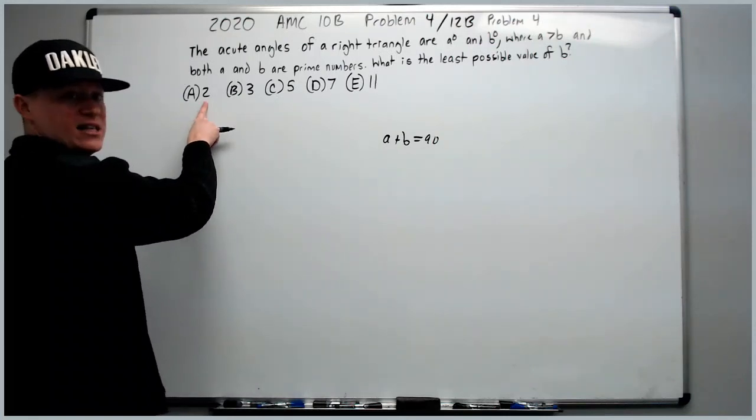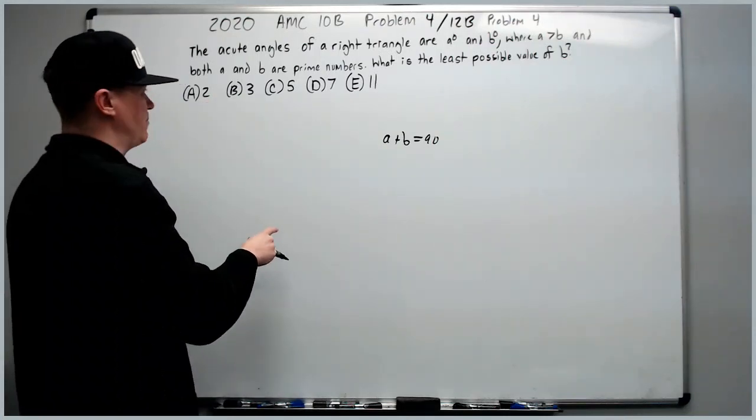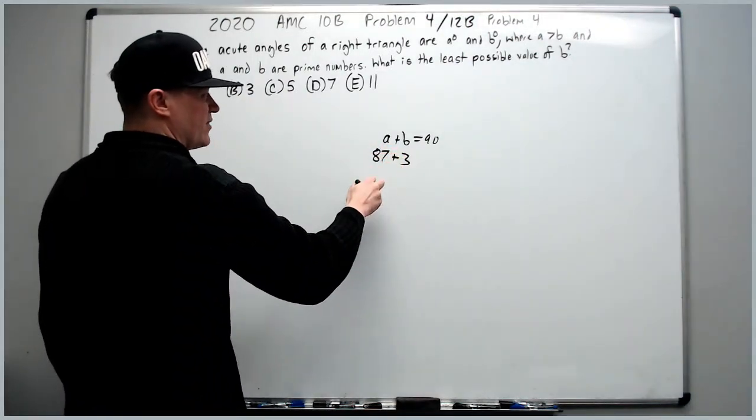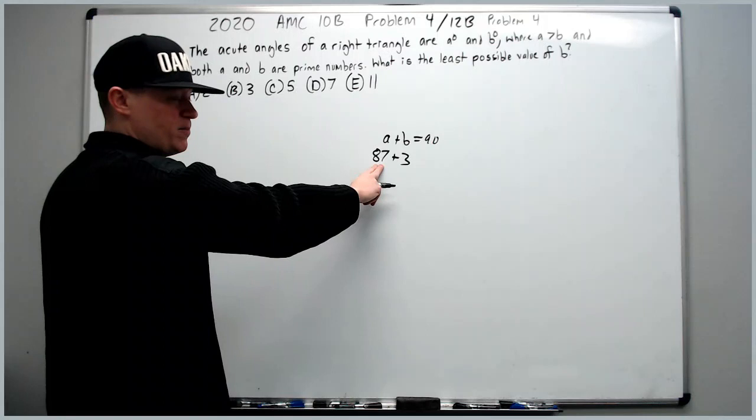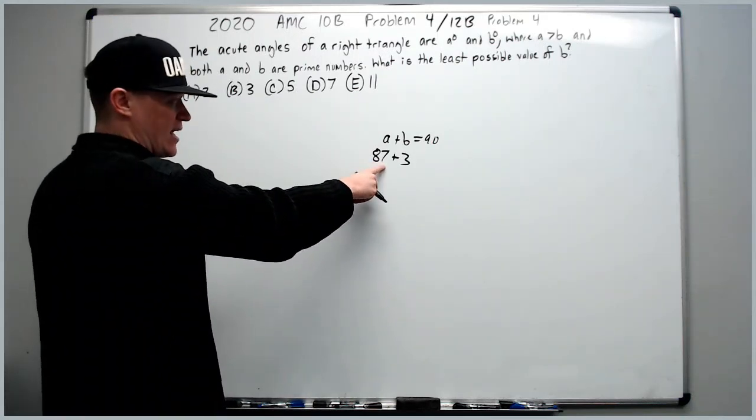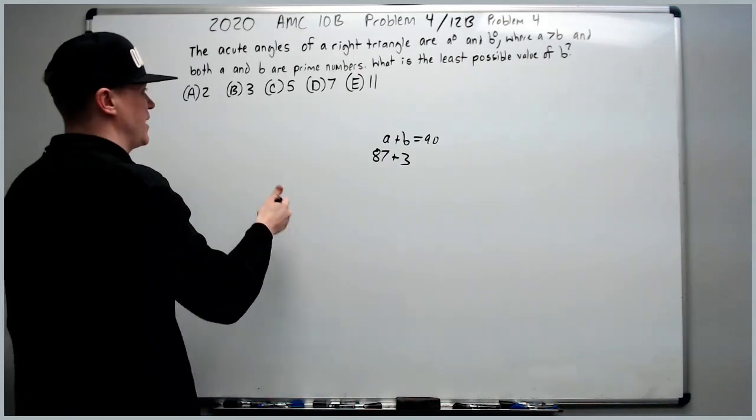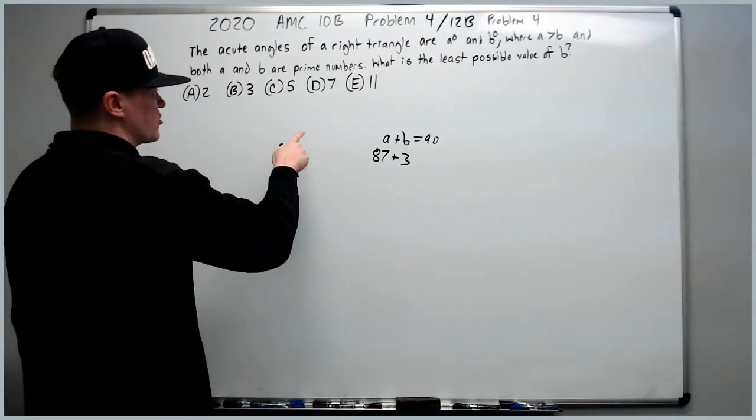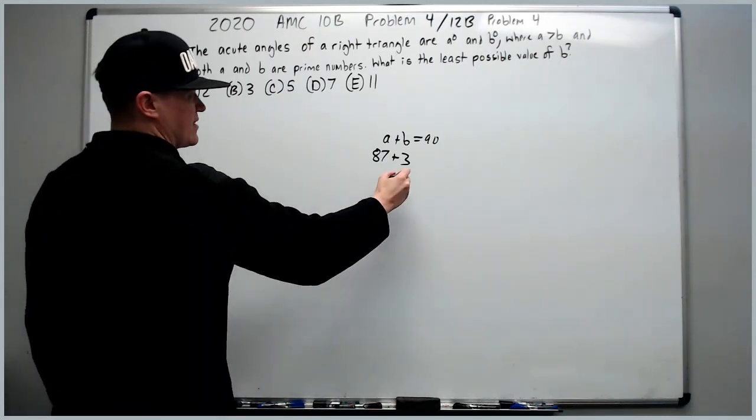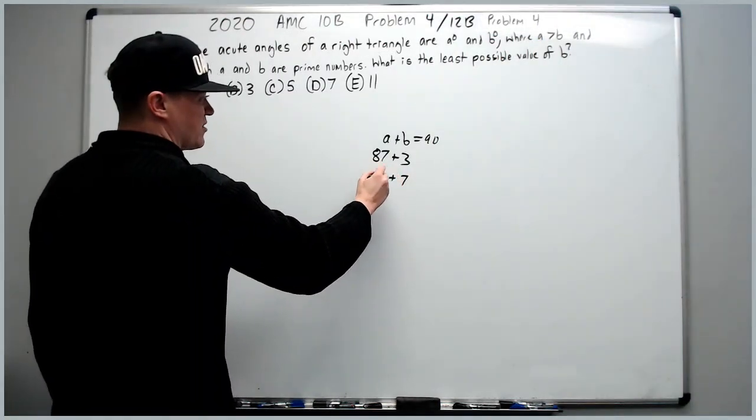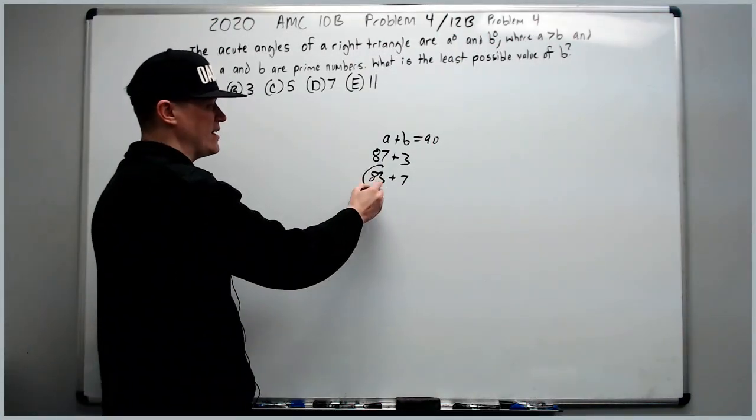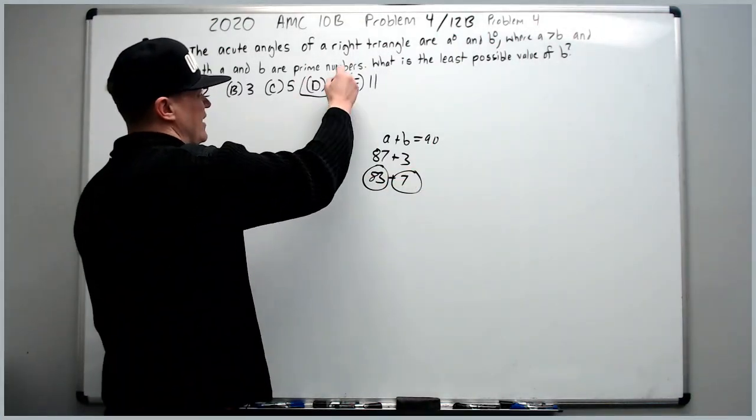We start with B could equal 2. No, because then A would be even and not prime. Could B be 3? No, then A would be 87. Always check for divisibility by 3 by adding the digits. You know this is divisible by 3 because 8 plus 7 is 15 is divisible by 3. So it's not B. Try 5. Doesn't matter. A is going to be a multiple of 5. It'll be 85. Doesn't work. Try 7. 7 and 83. Good idea to know your primes less than 100. 83 is prime, so 7 is the answer.